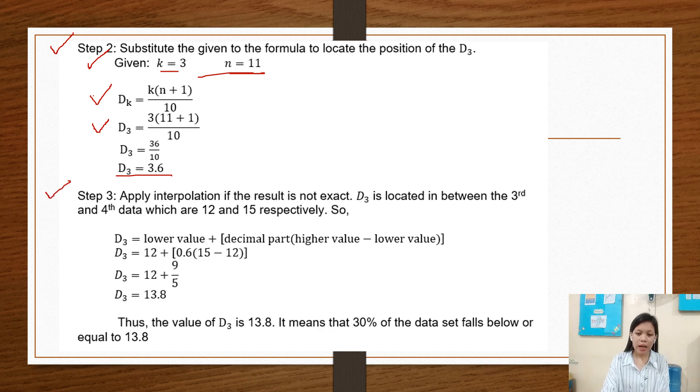Step 3: Apply interpolation if the result is not exact. D3 is located between the third and fourth data, which are 12 and 15 respectively. D3 equals lower value plus decimal part times higher value minus lower value. D3 equals 12 plus 0.6 times 15 minus 12, equals 12 plus 9/5, equals 13.8.